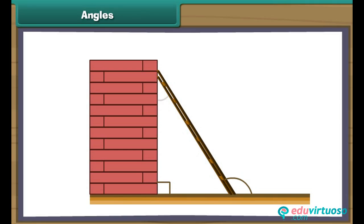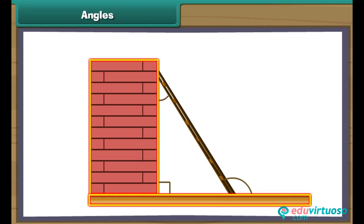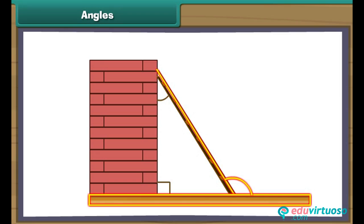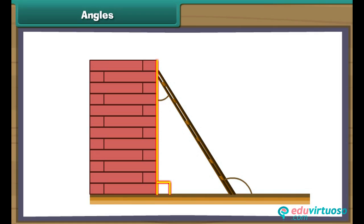Look at this scene — a ladder is standing against a wall. Let us look at three angles: first, the angle which the wall makes with the ground; second, the angle which the ladder makes with the wall; and third, the angle which the ladder makes with the ground. The ground acts as the base and the wall as the vertical line. The angle is L-shaped — it is a right angle and its measure is 90 degrees.